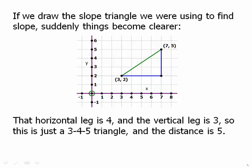So if the horizontal leg is 4 and the vertical leg is 3, this is just a 3-4-5 triangle. And so the distance between those two points, the hypotenuse, has to be 5.